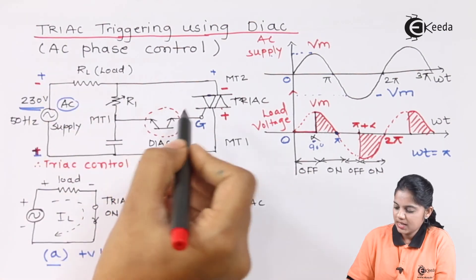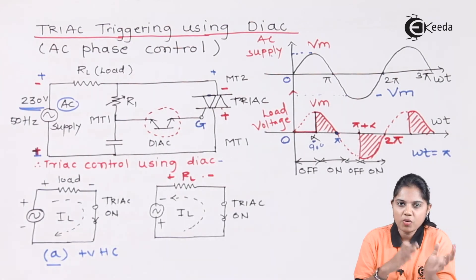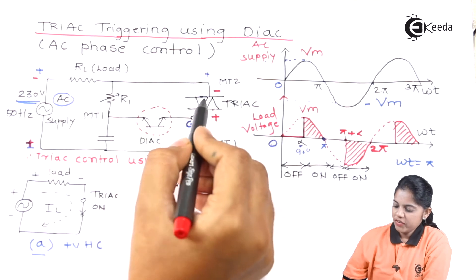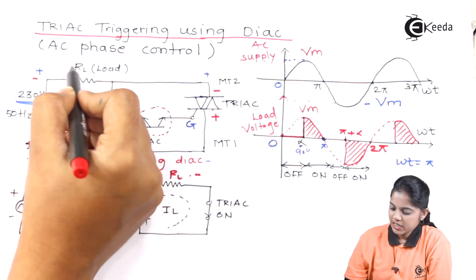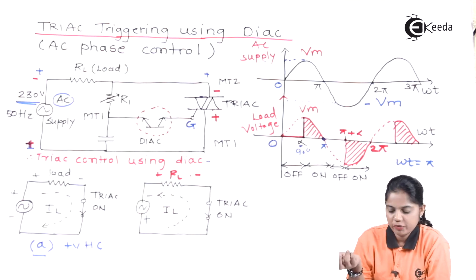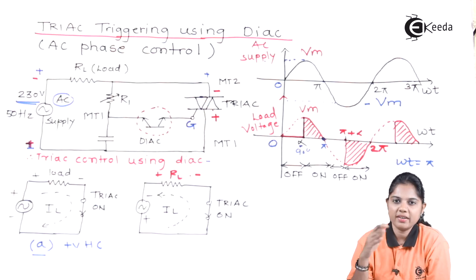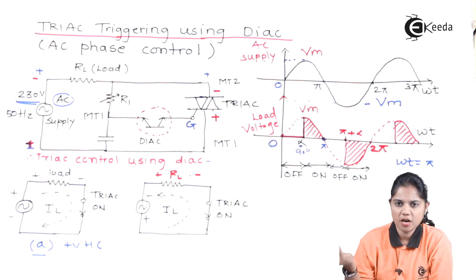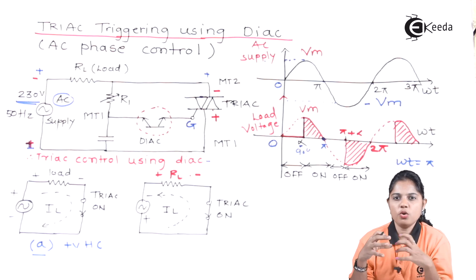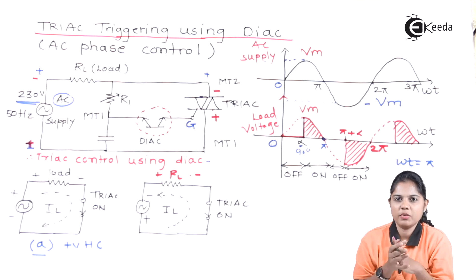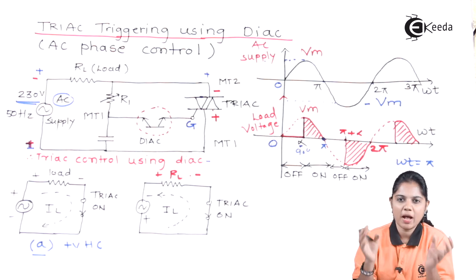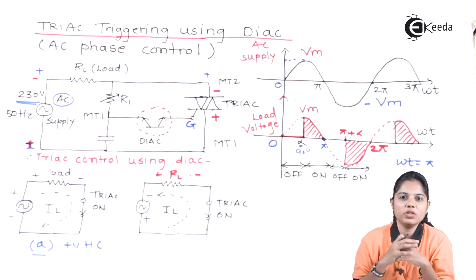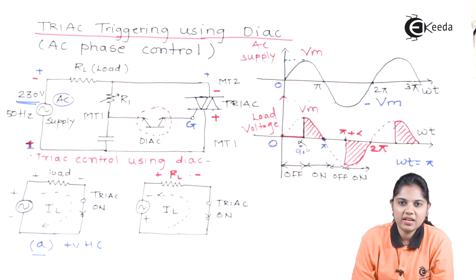The DIAC is used for triggering the TRIAC from off-state to on-state. We studied this circuit with a resistive load, but the load can be different — for example, an electric bulb — making this circuit usable as a light dimmer. The load can also be a motor, so TRIAC and DIAC together can be used for different types of industrial applications. I hope you have understood how TRIAC and DIAC can be used together. Thank you for watching — stay tuned and subscribe to EKIDA.